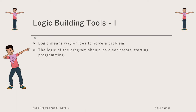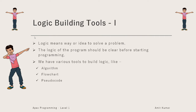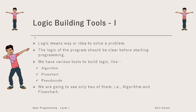Logic means an idea to solve a problem, and there can be different ideas to solve the same problem, but the idea should be clear. Before you start writing the code for your program, you should be clear about the logic you are going to use. We have various tools to build logic, like algorithm, flowchart, and pseudocode. We are going to see only two of them — algorithm and flowchart — though we will mainly focus on flowchart as it's the easiest way to show the logic of any problem.